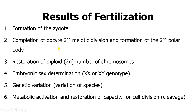Completion of the second meiotic division allows for the formation of the second polar body. Remember, the spermatozoon and the ovum are haploid in number, so once they fuse, you restore the diploid state. If the spermatozoon that has gone in is carrying the Y chromosome, then you get an XY genotype. If it's carrying an X chromosome, then you get an XX genotype. That process is important in terms of sex determination.